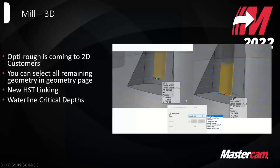Waterline added a feature called critical depths. You now have a lot of control over where passes happen on a Waterline tool path. For example, with a given step down in 2021 it would skip cutting a flat pocket floor, leaving excess material. Now you can turn on critical depths and say include flats — even though it's technically outside your step down parameters, it'll add a cut there. You can set flats only, contact flats, or use the manual function to pick a face and create a depth cut at that exact location.